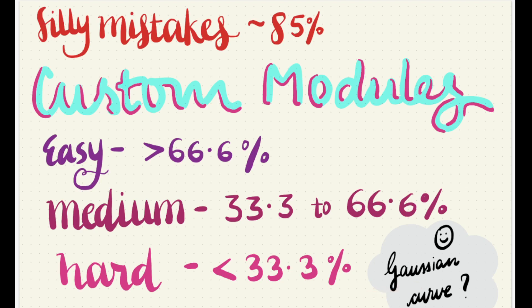This basically looks like a Gaussian curve that we studied in biostats. I think this cut-off — where easy would be this percentage of people attempting that question and going that way — would be really significant while doing the custom modules in the Q-banks.